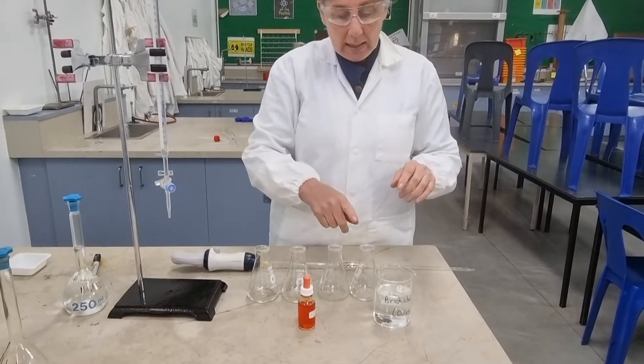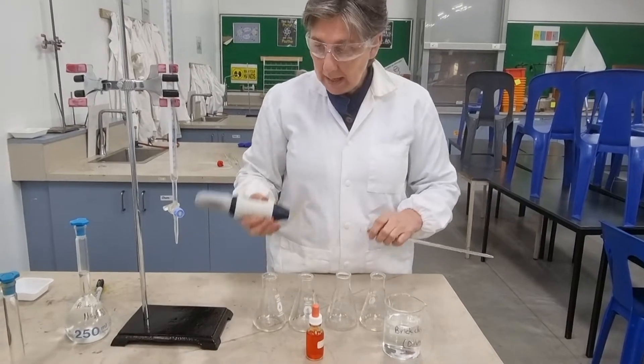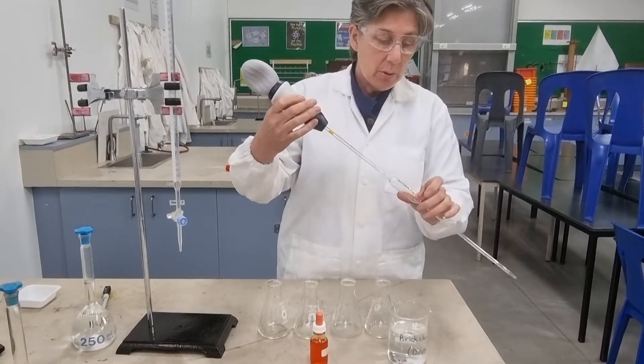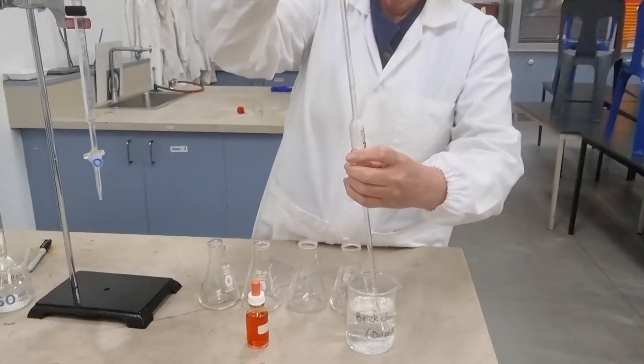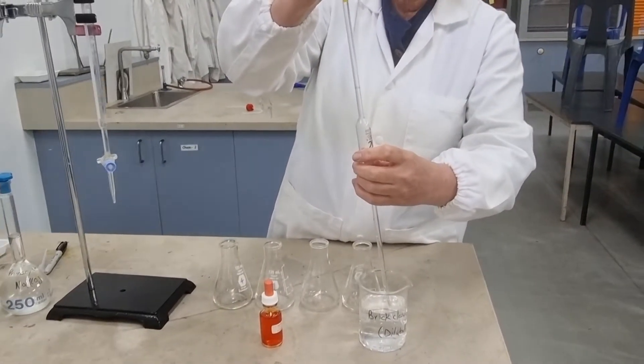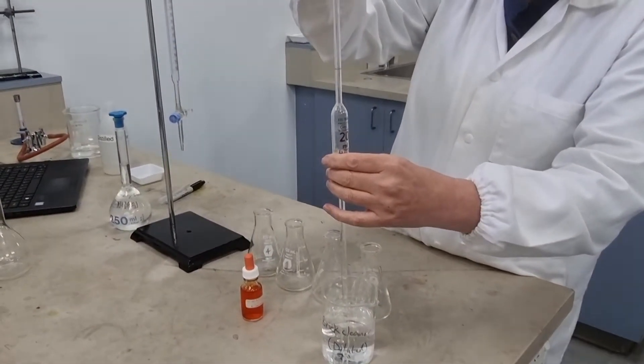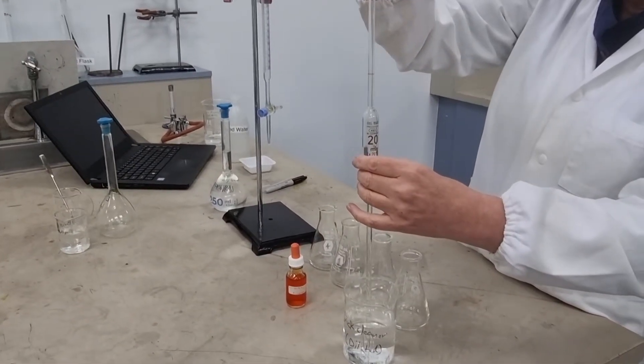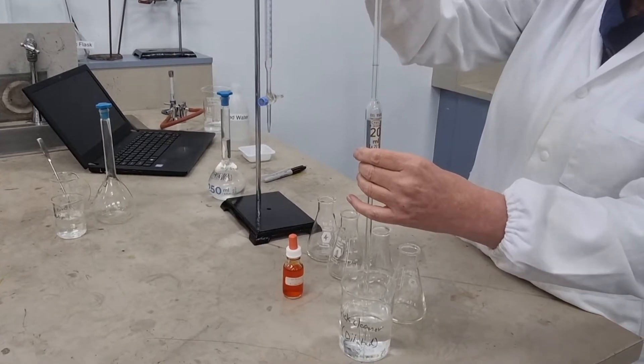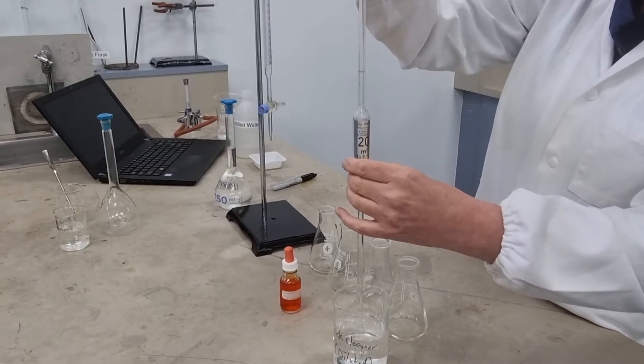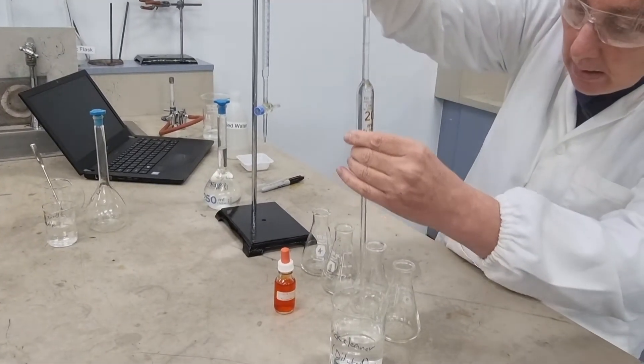We're going to put 20 mils in each conical flask. So then we need to get concordant titers, which when we do our titration will be plus or minus 0.1 mils. All right, so that's why we need to have multiple.